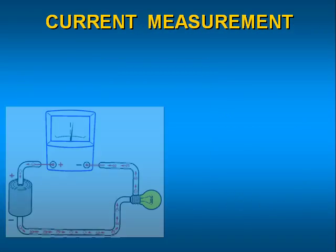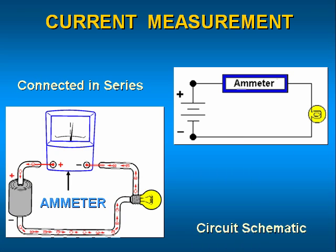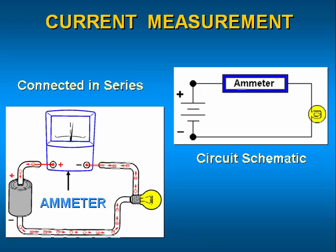Current flowing in a circuit is measured with an ammeter. The unit of measure is the ampere. The ammeter must be placed in series with the current it is measuring. In other words, the current must pass through the meter. Ammeters are very low resistance instruments. They are designed to measure current flow without appreciably affecting other parameters in the circuit.